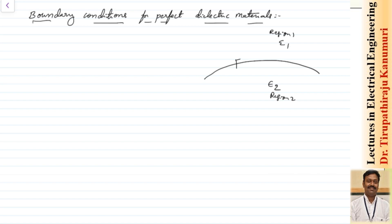To calculate the value of E, we take the line integral, which is why I have taken this loop. Let us assume this width is equal to delta w. The tangential component on this side is Et1 and on the second medium it is Et2. Let us assume this height is equal to delta h. For calculating the normal component I am taking a surface delta s, with Dn1, and the electric field moving from region 2 to region 1 as Dn2.